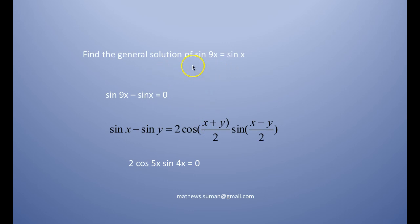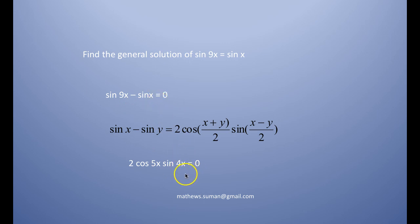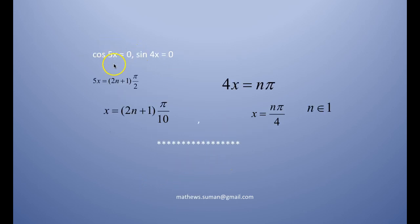Find the general solution of sin 9x = sin x. Taking sin x to the left, this is of the form sin A − sin B = 0. Applying the formula sin A − sin B = 2 cos((A+B)/2) sin((A−B)/2), we get 2 cos(5x) sin(4x) = 0. So either cos 5x = 0 or sin 4x = 0.